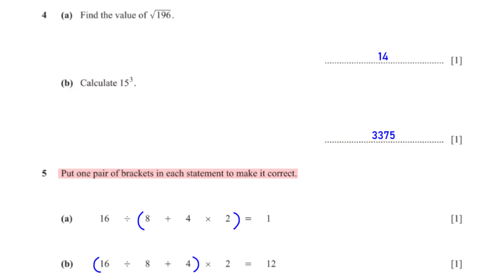Put one pair of brackets in each statement to make it correct. To make this correct, we put a pair of brackets around 8 plus 4 times 2. 8 plus 4 times 2 gives us 16. So 16 divided by 16 is 1.